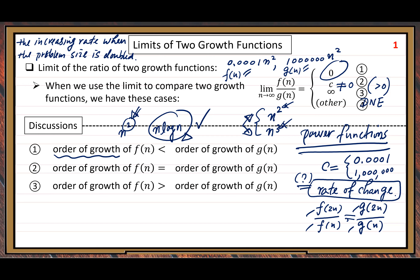For the last case — the limit does not exist — we need a lot of discussion. The limit of f(n)/g(n) is not guaranteed to always exist. When you learn calculus, you know a limit does not exist can happen. Here, let me give you a simple example of why the limit does not exist. Let us consider the ratio of these two functions.